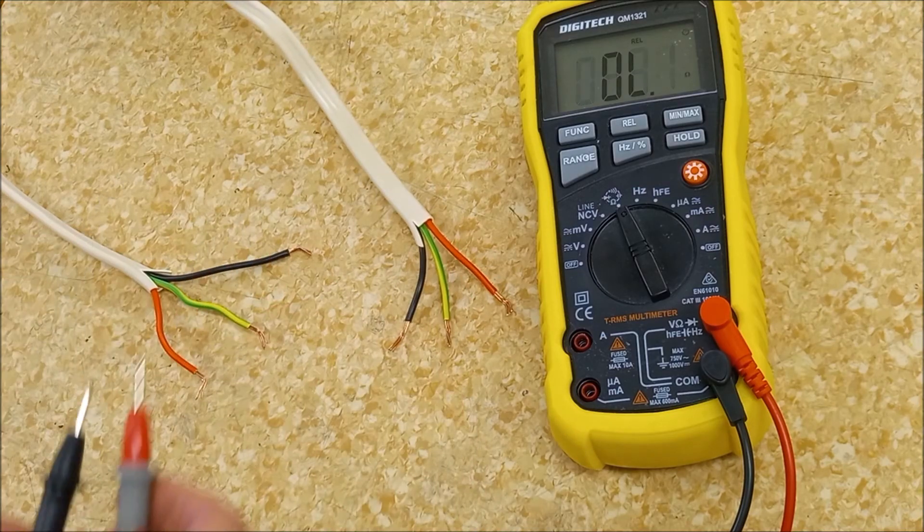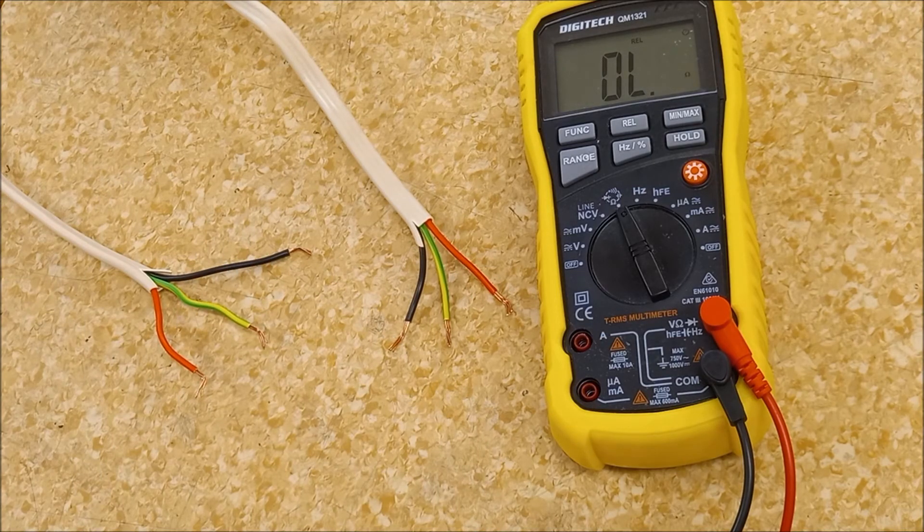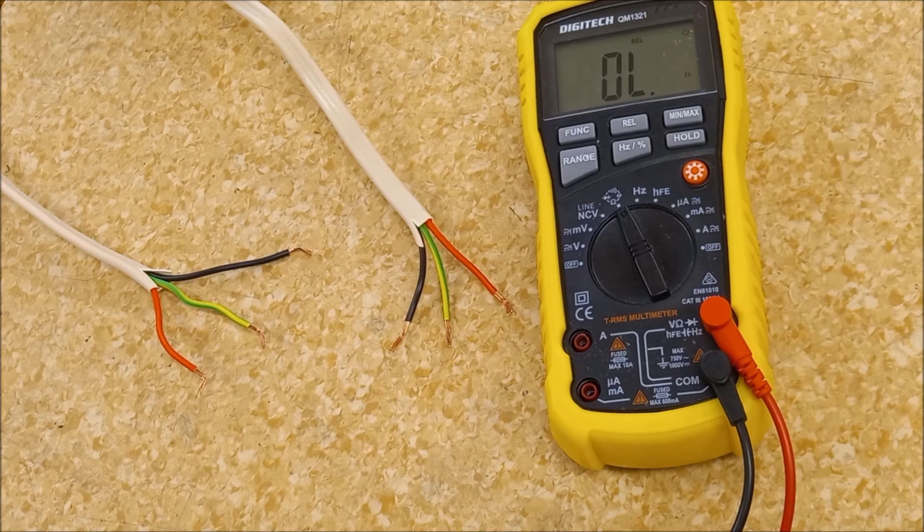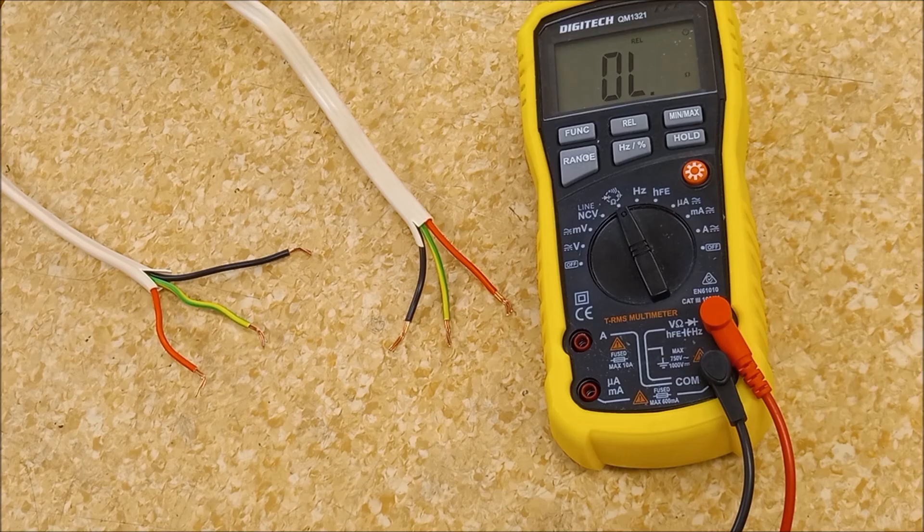So we know that they're continuous, which is the first check we did. That was polarity. Very similar checks but not exactly the same. The links for the descriptions of polarity, continuity and insulation resistance are in the description below.